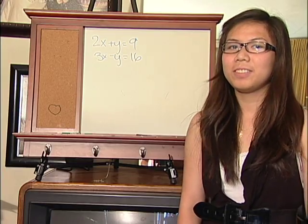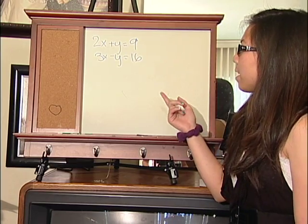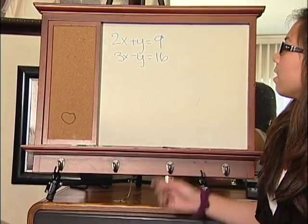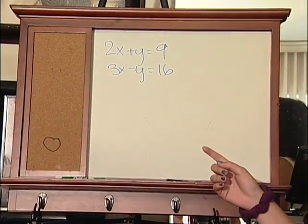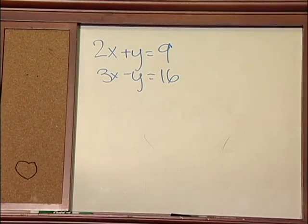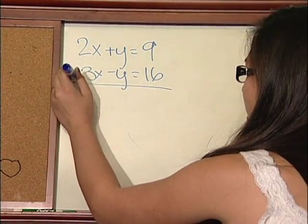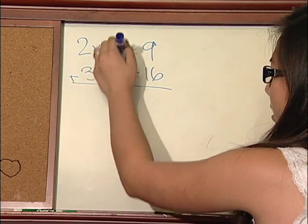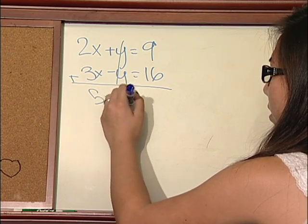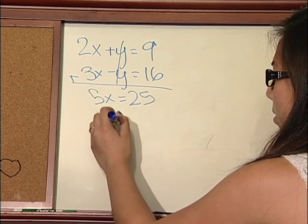We could also use the elimination method to solve a system. Here we have 2x plus y equals 9, and 3x minus y equals 16. Notice that one of the variables has the same coefficient — in this case, it's y. So I'm going to add these two equations. The y's cancel out, leaving us with 5x equals 25. Solve for x and you get 5.